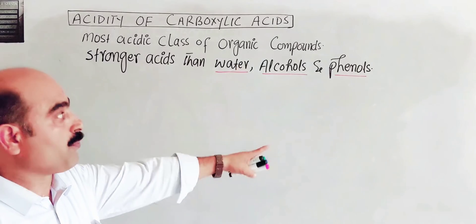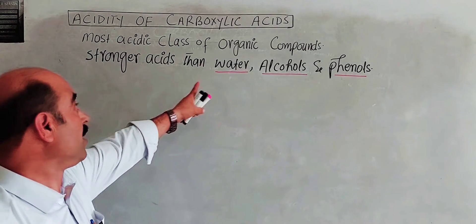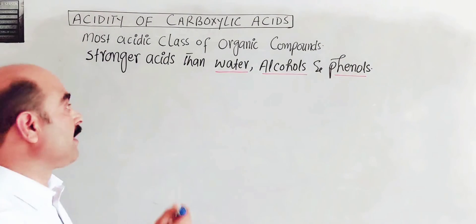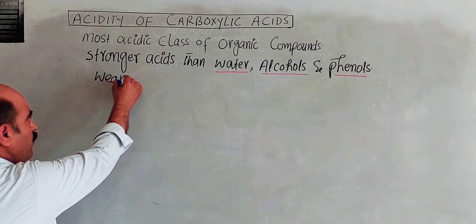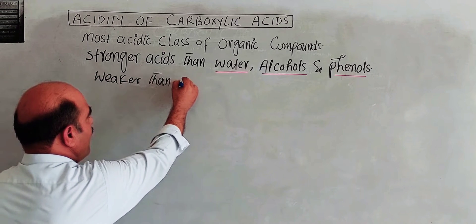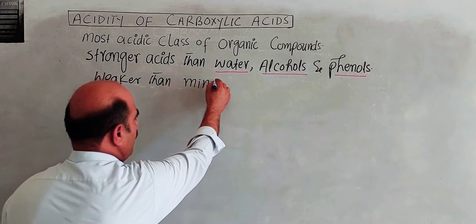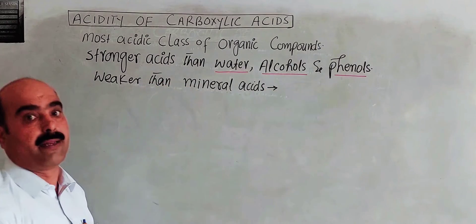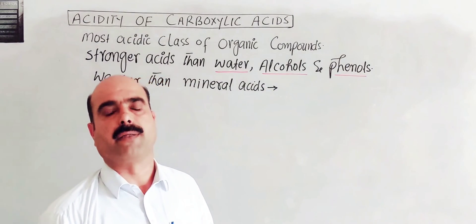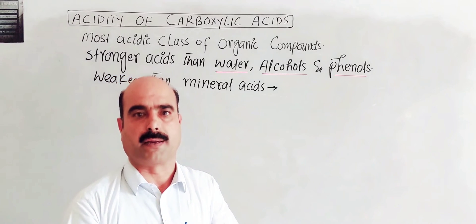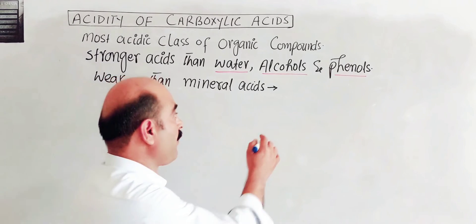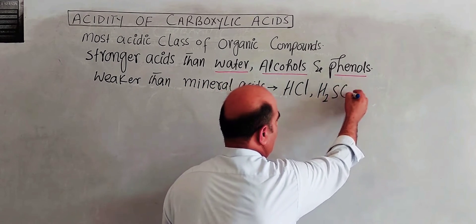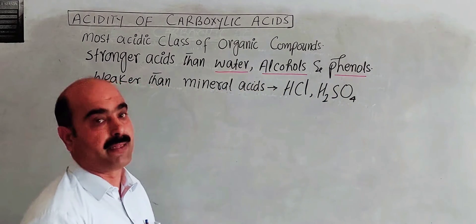However, carboxylic acids are weaker acids than mineral acids. Examples of mineral acids are HCl and H2SO4 — these two are the classic examples of mineral acids.